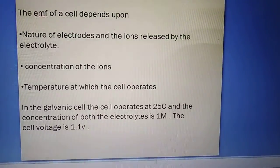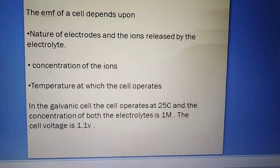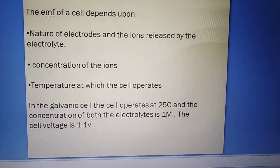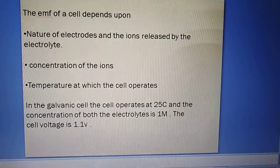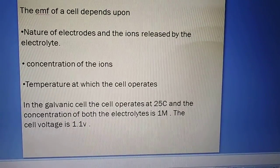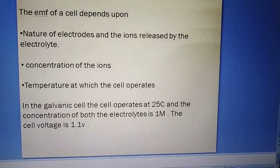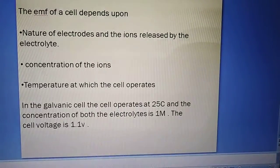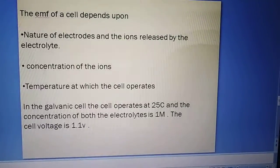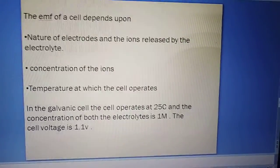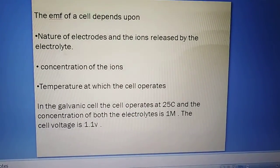The EMF of a cell depends upon the nature of electrodes and the ions released by the electrolyte. The EMF differs for different metal electrodes and also for different ions, and also EMF will vary if the concentration of the electrolyte differs.